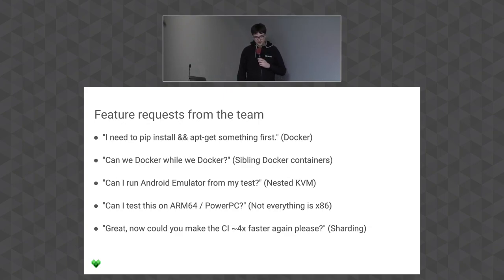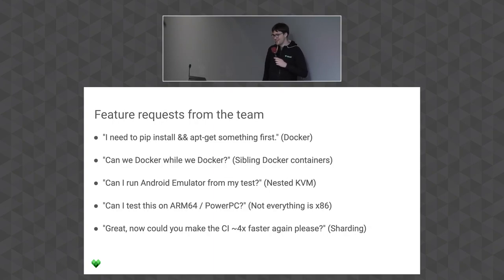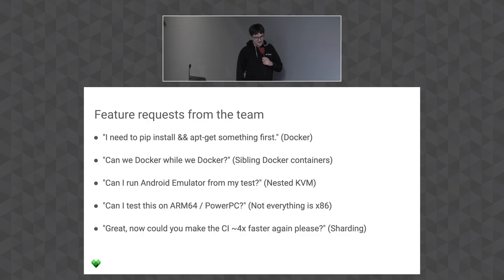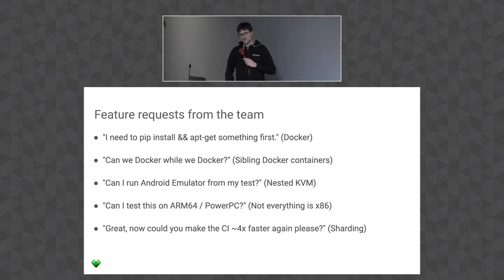Some people wanted access to the Docker socket, which is ambitious from a security point of view. Then the Android team came: 'Okay, now we need KVM on your VM' — in the Docker container — so we had to spawn VMs on Google Cloud inside the VM. Then the community said: 'Not everyone uses x86, we have ARM64 and PowerPC — test this.' And after all that, users still wanted pre-submit to run faster.